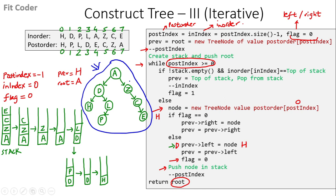In this method, we just keep going right and keep pushing nodes in the stack. Once the top of the stack matches the inorder index, then we start popping from the stack. Now that we have seen the algorithm, let's have a look at the implementation.